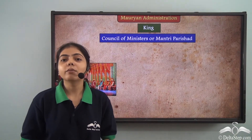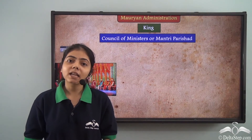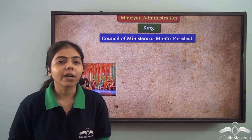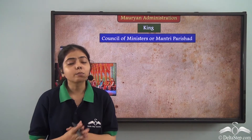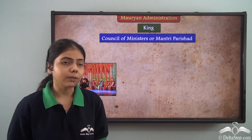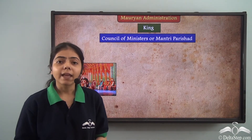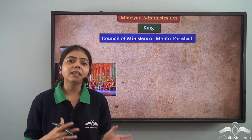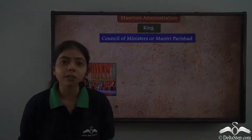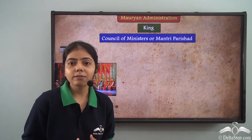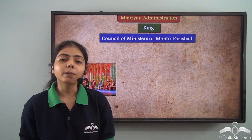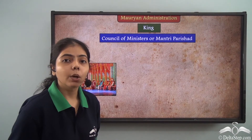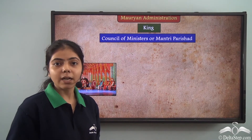The Mauryan Empire was huge, and governing such a large empire would have required very serious planning of administration. Let us look at how this Mauryan empire was administered. Just as the government of India today has different ministers and a prime minister with cabinet ministers who help govern different parts, let us see how the Mauryan government was divided into different parts for better administration.